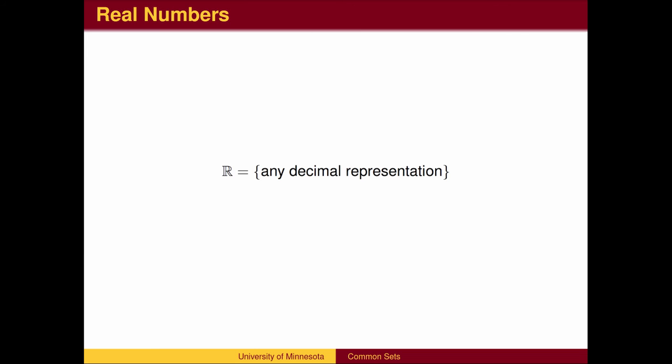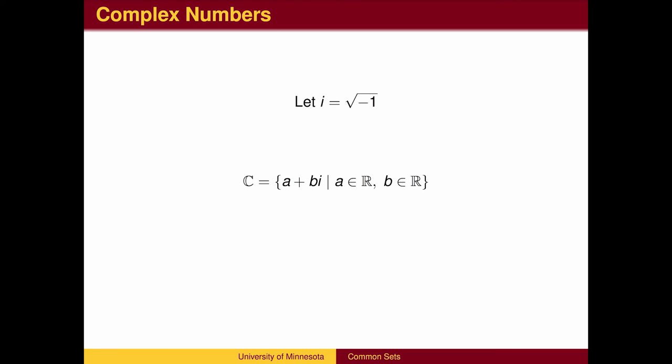Then we tried to take the square root of negative 1, and we needed more numbers. We let i equal the square root of negative 1. The set of complex numbers, denoted by the letter C, is the set of all numbers of the form a plus bi, where a and b are real numbers, and i is the square root of negative 1.